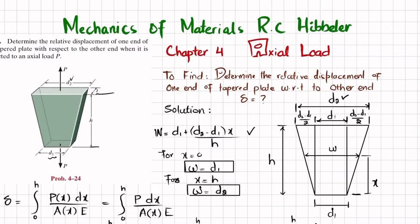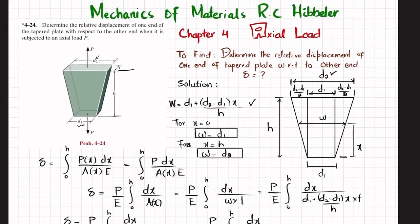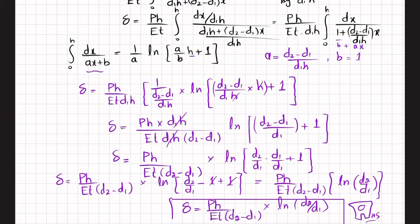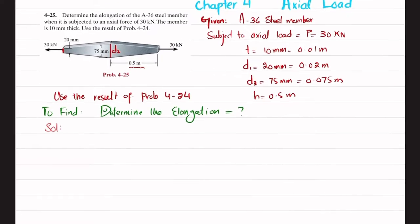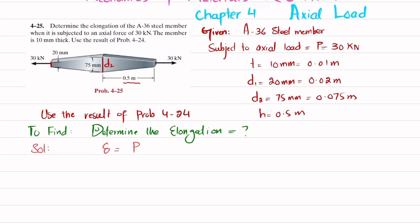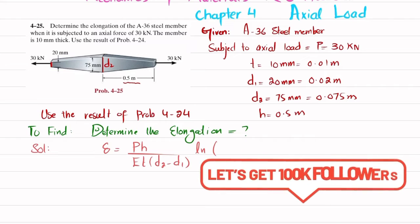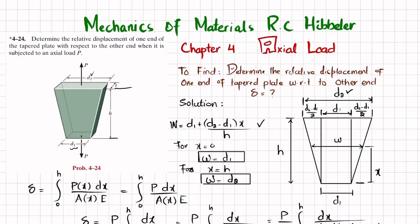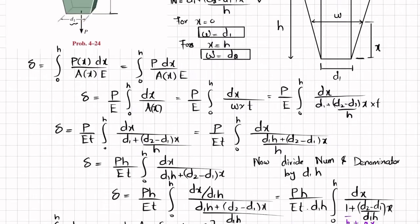If we move to the previous problem 4-24 which we have solved, this is the result. The deformation delta is equal to P times h divided by E times t times (d2 minus d1) times ln of (d2 over d1). First let me clarify. You can see this is the smallest width d1 and this is the largest width d2, and it is acted upon by axial load, and total height is h.